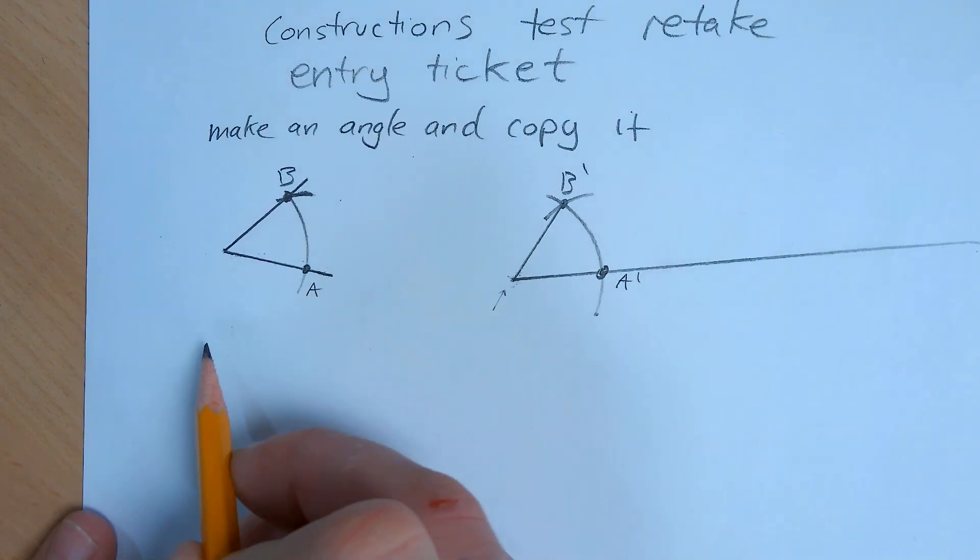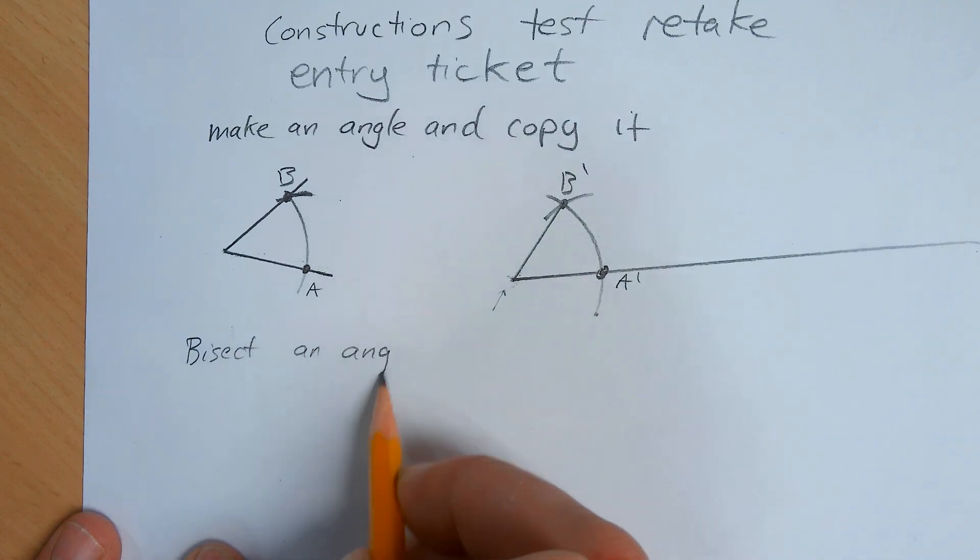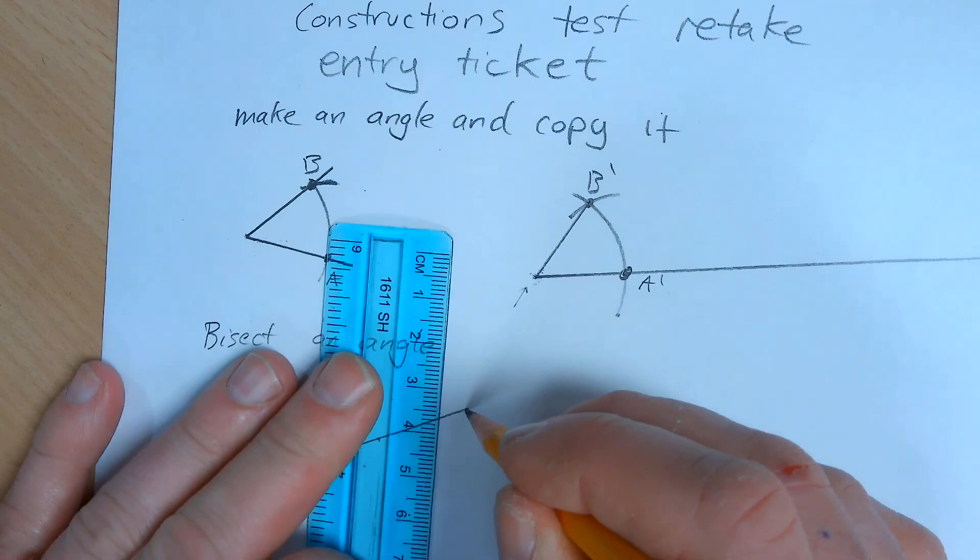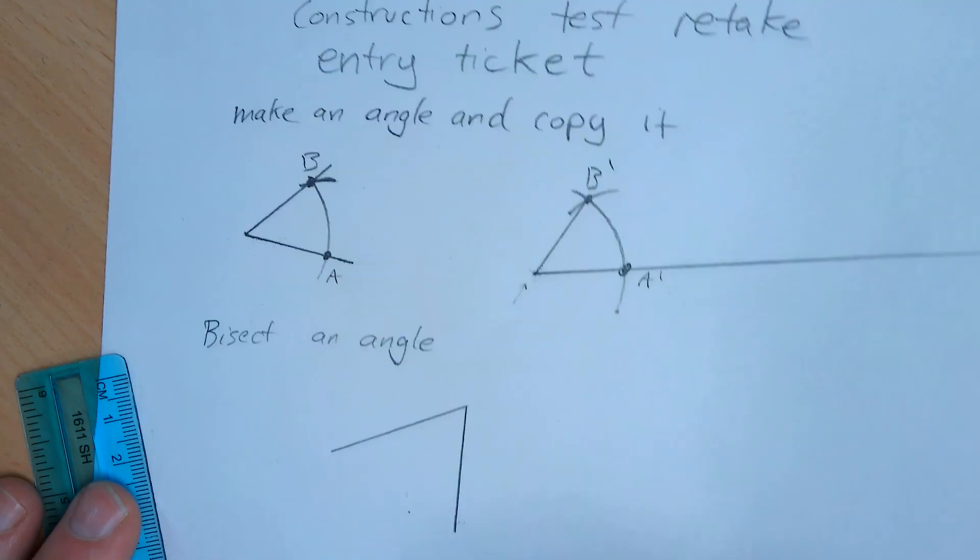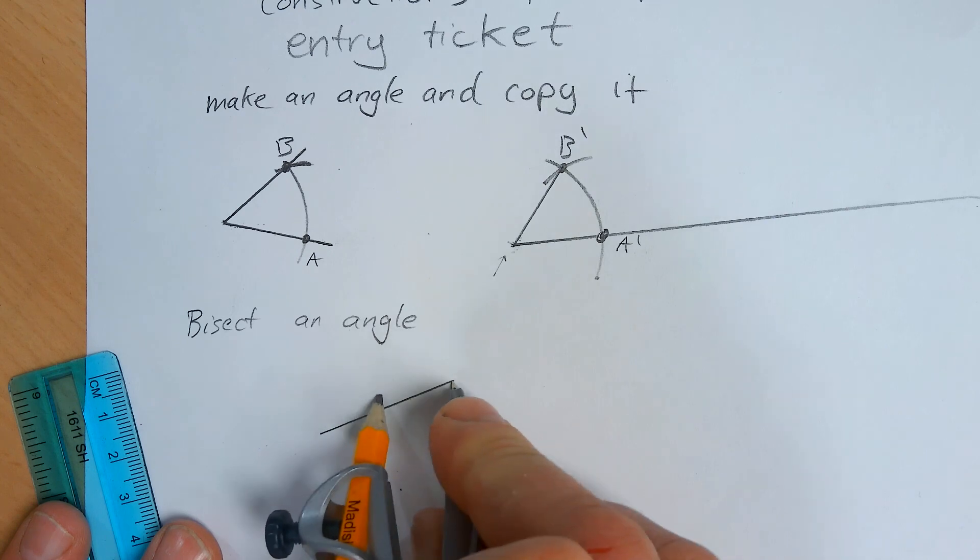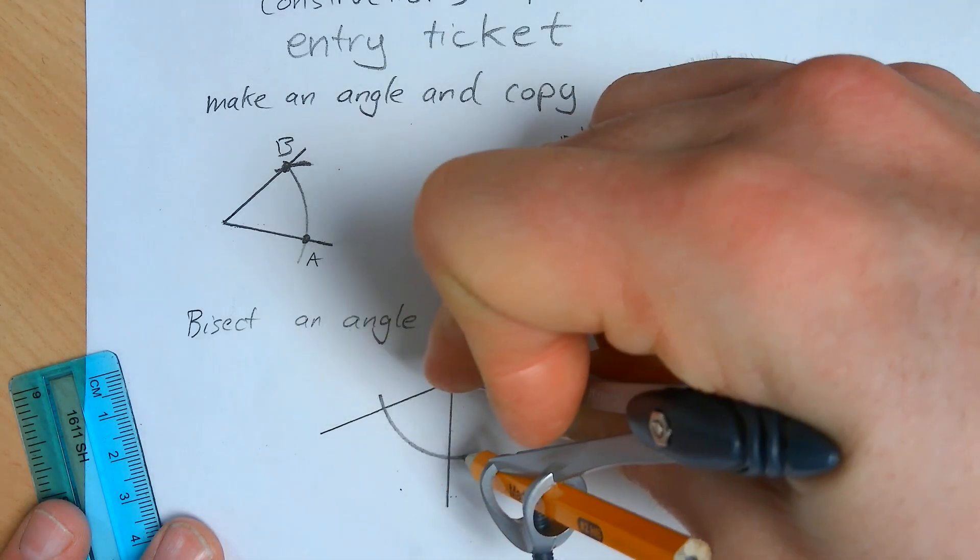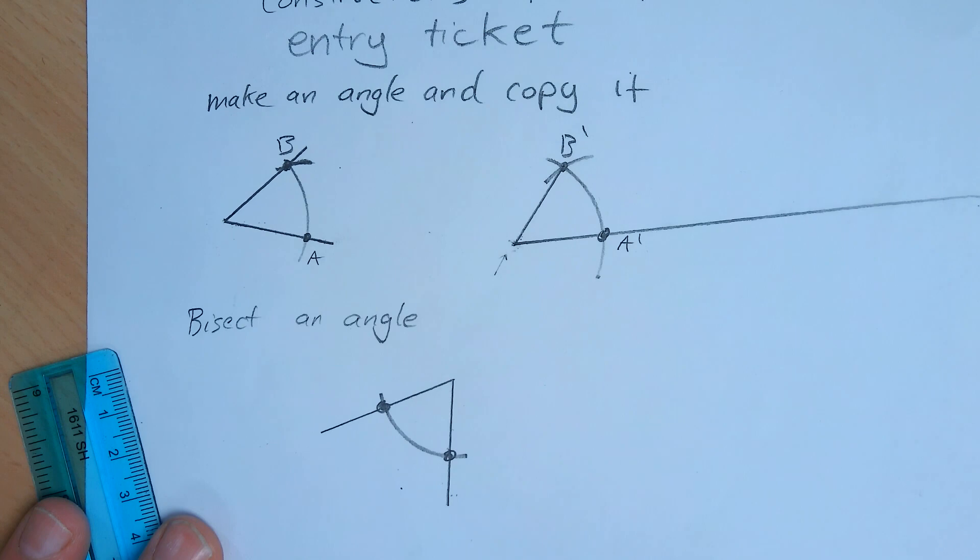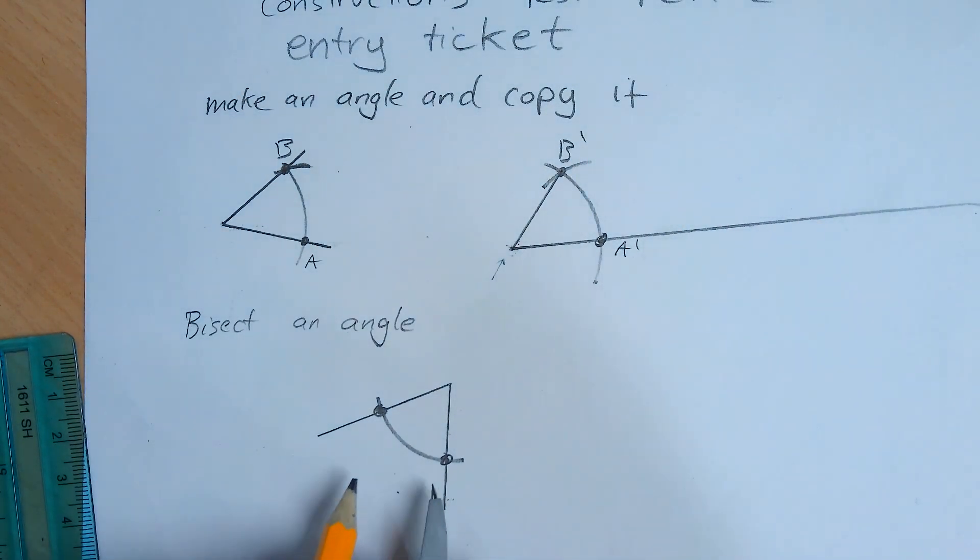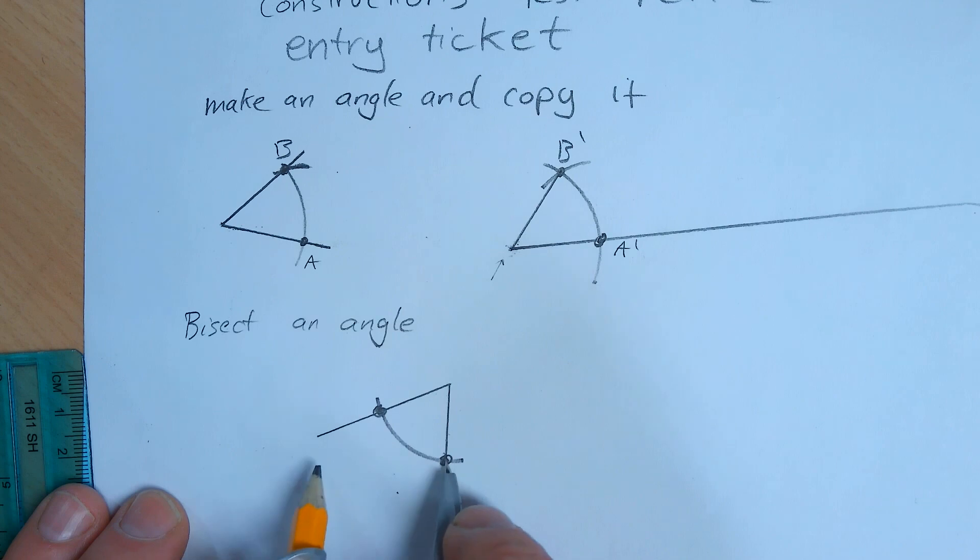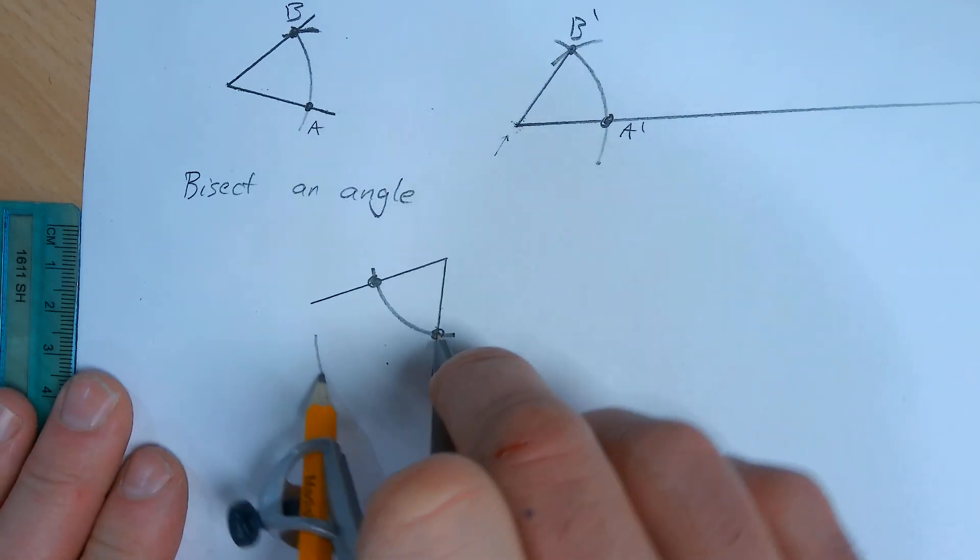The next skill is bisect an angle. For this you need to make an angle again and now we're going to bisect it. The way you do that is by measuring out the angle to two locations here and here. Then you can make the compass a little bit bigger as long as you're not making a rhombus, which we're not.